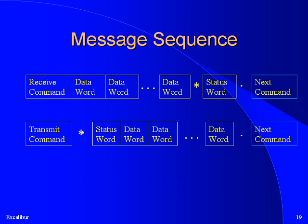Here we are looking at a graphic representation of the different message types. A receive command, also called a BC to RT command, is followed immediately by the data the BC wishes to transmit. Only the RT named in the command word pays attention to this message. If the command and data are successfully received, the RT will respond with a status word.